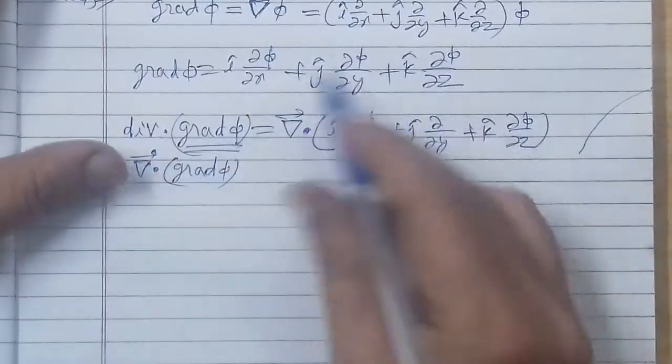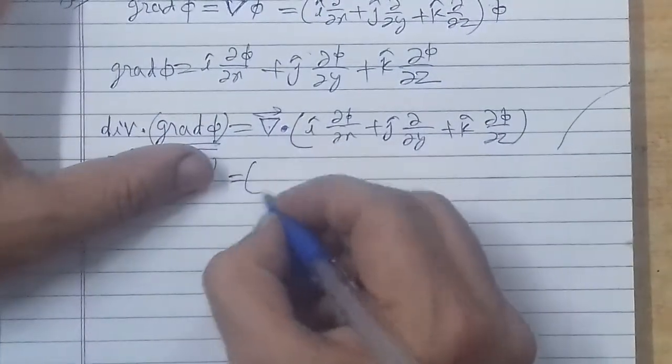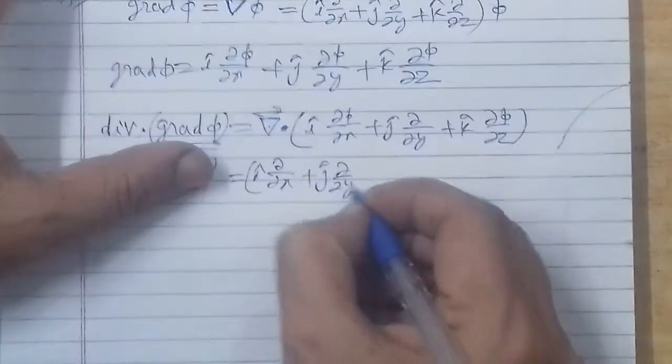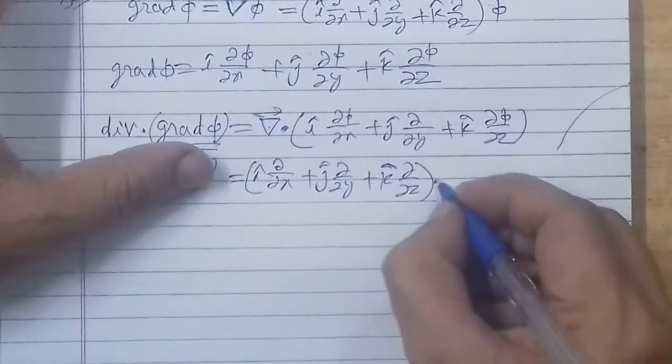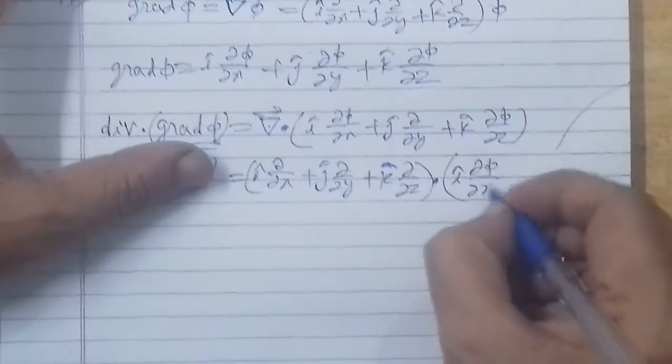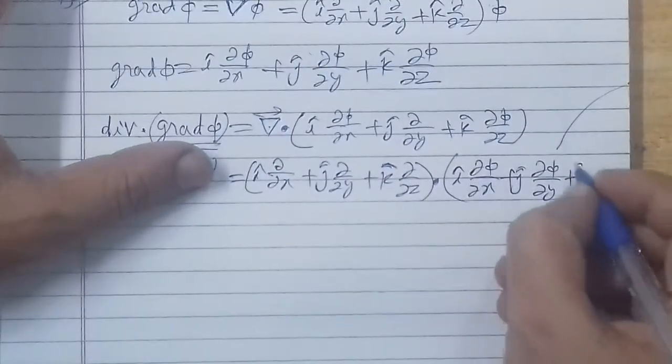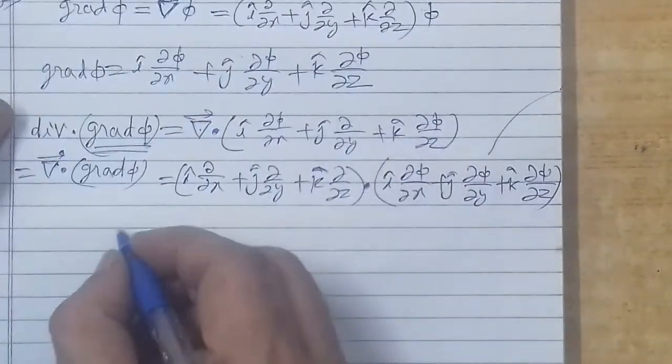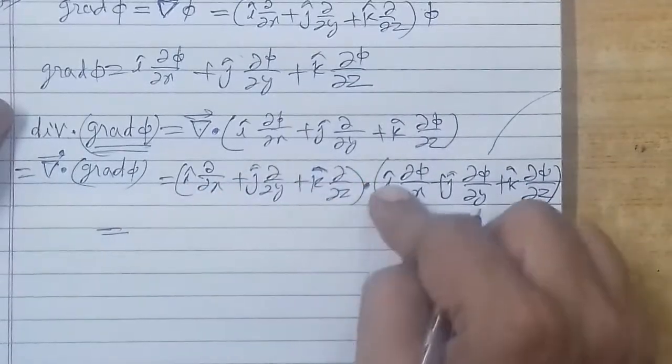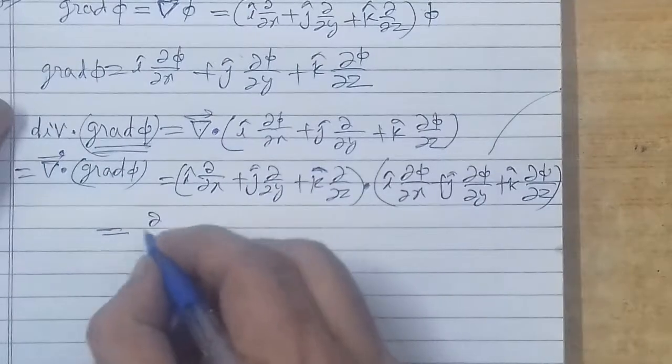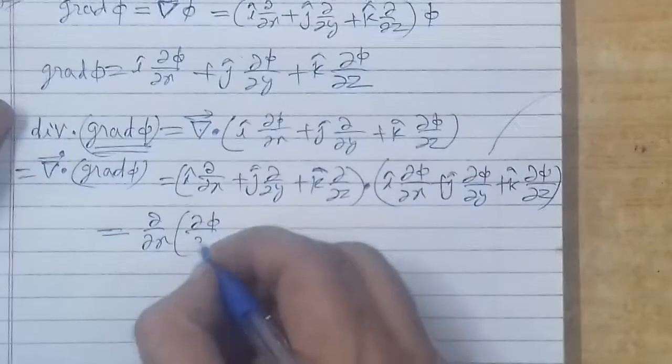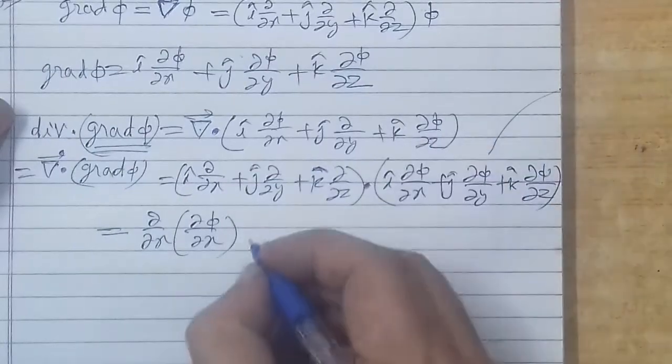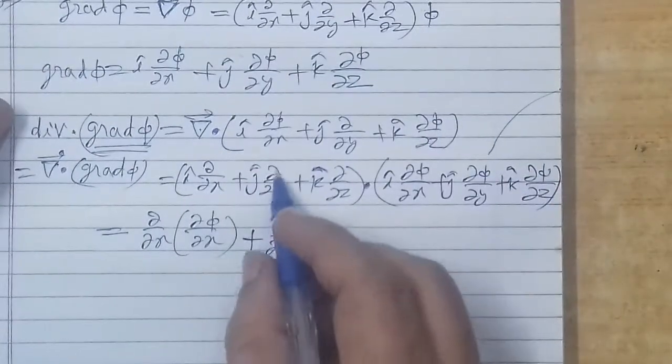After that we will write del's value which is already written above: i cap del over del x plus j cap del over del y plus k cap del over del z, dot i del phi over del x plus j cap del phi over del y plus k cap del phi over del z. We have two vectors, we have to do their dot product. We know vector dot product definition means that i dot i is 1, i dot j and i dot k will be 0. So if this del over del x operates, it will operate on del phi over del x.